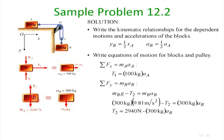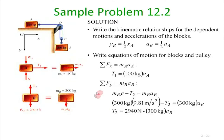For mass B (300 kg), forces are tension T₂ from the link connecting C to the mass, and weight downward. The equation of motion gives mB·aB = ΣF. We have four unknowns: aA, aB, T₁, and T₂. With the constraint aB = ½aA, we still have three equations and four unknowns, so we need one more equation.